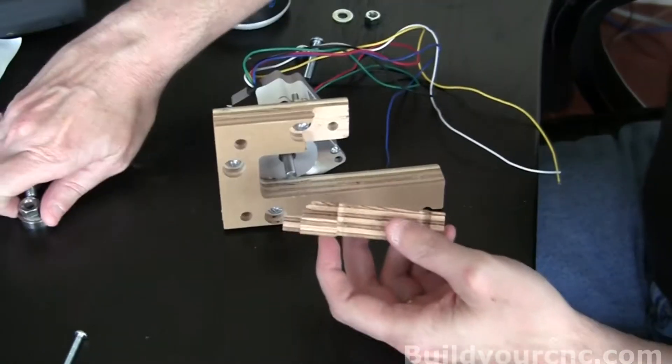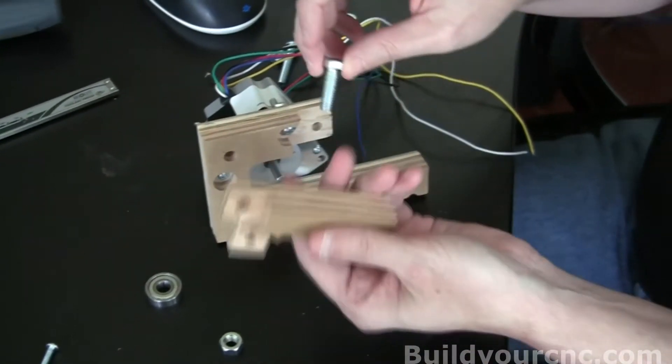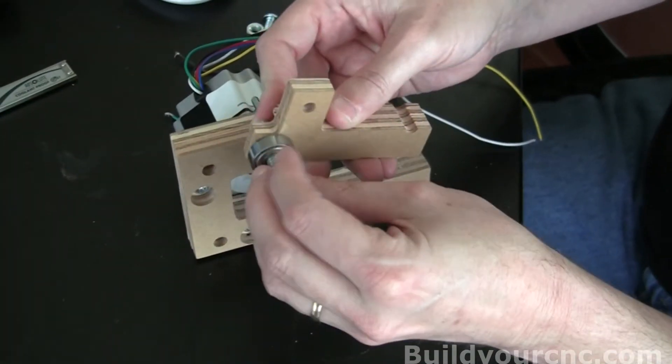Now we're going to take the five sixteenth inch screw. We're going to put it into this larger hole that we have on this piece. We'll put the bearing on and then the nut goes on after that.